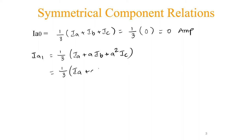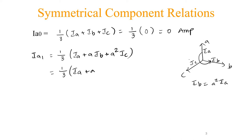To simplify this, since the system is a balanced system with phase sequence ABC, we can represent the current Ib as A²·Ia and the current Ic — since Ia has to rotate 120 degrees — as A·Ia. So we can substitute Ib as A²·Ia and Ic as A·Ia into the positive sequence expression.